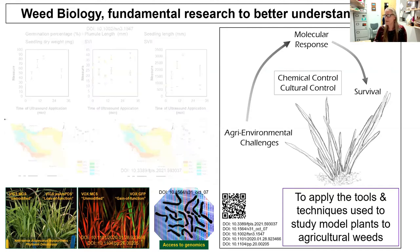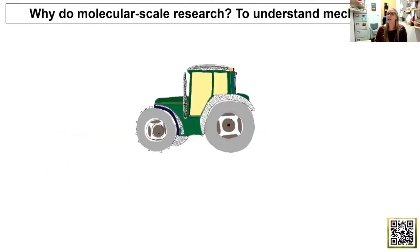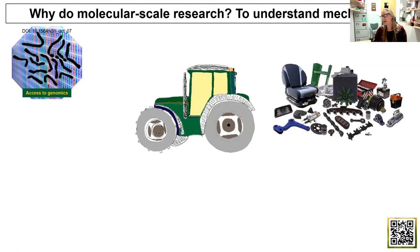I'm going to focus on genetics and genomics to give you an idea of why you might do this sort of work. Why do molecular-scale research? Really, the answer is to understand mechanism. If you wanted to know how a tractor worked, the easiest way is to lift up the bonnet and figure out what's going on under the hood. You'd see the parts list — all the things involved in making the tractor work. The equivalent in molecular biology is having access to the genome: the genome is the complete parts list and tells us exactly what's there, how many copies, and what they could possibly do.